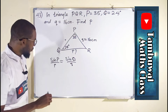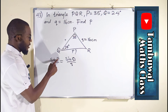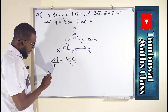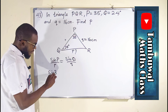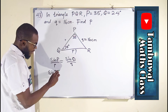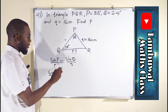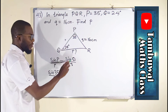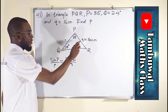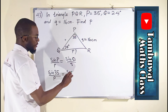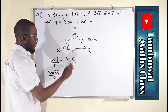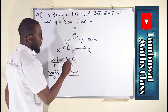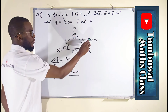Now let's substitute. Our angle P is 35 degrees, so we write sine 35 over p, which we are looking for. This is equal to sine Q, which is sine 24 over q, and q is 16.